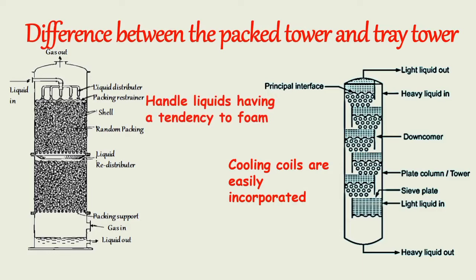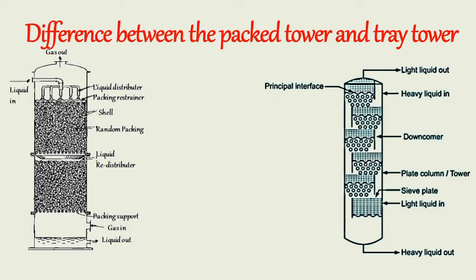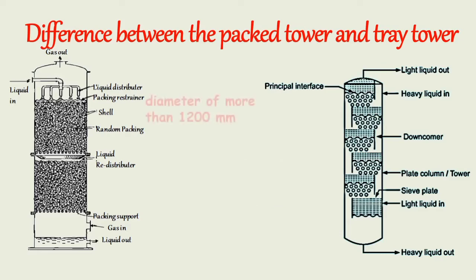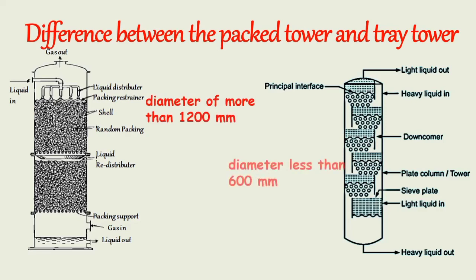For a given duty, the total weight of a dry plate tower is normally less than the weight of a packed tower, but the weight of both towers is approximately the same if the liquid hold-up in the plate tower during operation is taken into account. For a column diameter of more than 1200 millimeters, packed towers are seldom designed. For a column diameter less than 600 millimeters, packings are cheaper than plates.